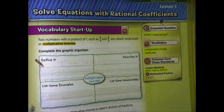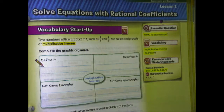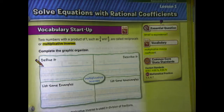Let's start on page 111 with the vocabulary startup. It says two numbers with a product of 1, such as three-fourths and four-thirds, are called reciprocals, or multiplicative inverses. Recall that when we divide fractions, we actually are multiplying by the multiplicative inverse, or the reciprocal of the second fraction.